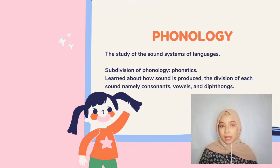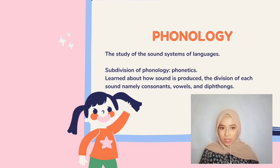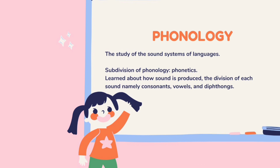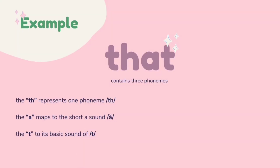Basically, phonology is a study of the sound system of languages. A subdivision of phonology is phonetics, which learns about how sound is produced, the division of its sounds — namely consonants, vowels, and depth sounds. For example, the word 'the' contains three phonemes: the TH represents one phoneme, the A maps to the short 'a' sound, and the final TH to its basic sound of TH.